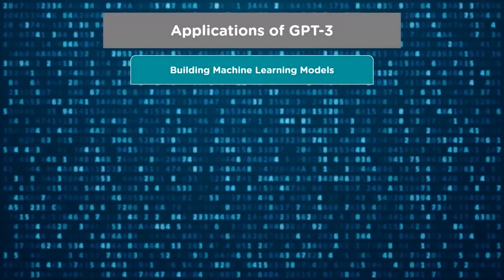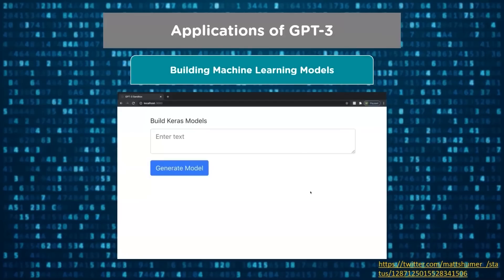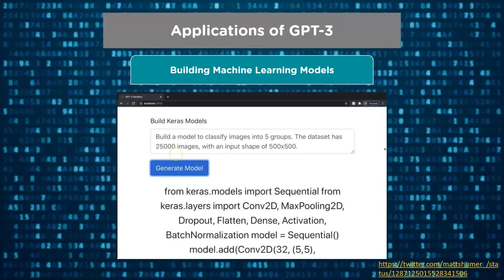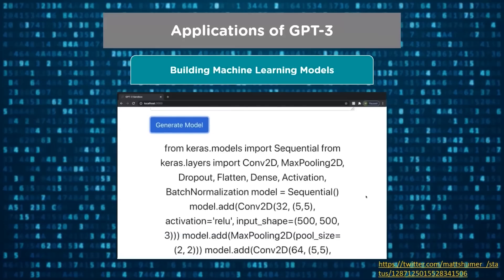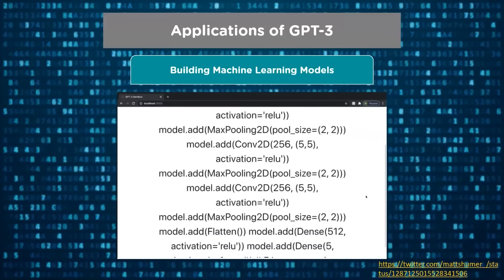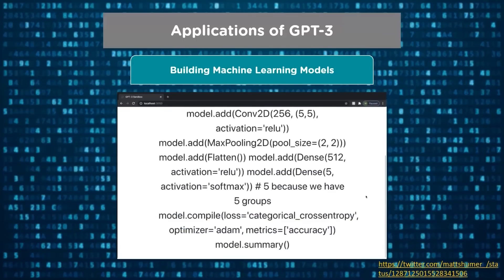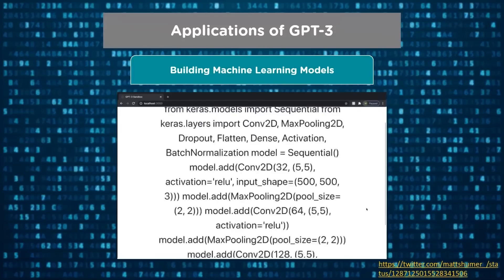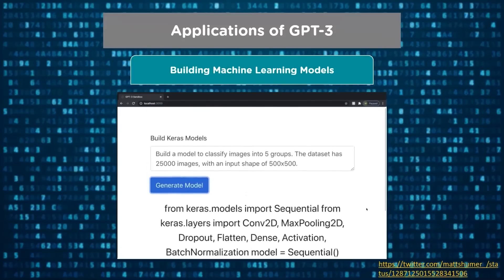Another application of GPT-3 is that it can build a machine learning model by generating code automatically. The user is given a description of the dataset and a desired output in plain English — for example, building a model to classify images into five groups, with a dataset of 25,000 images and an input shape of 500 by 500. GPT-3 understands the user input and creates a convolutional neural network model using the Keras library, complete with pooling layers, the ReLU layer, and activation functions.